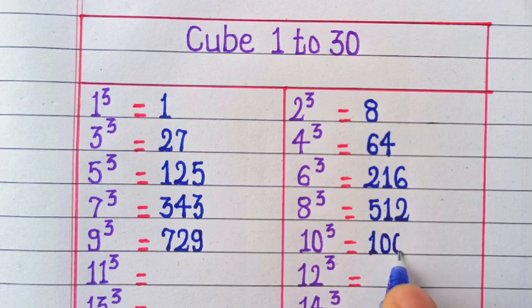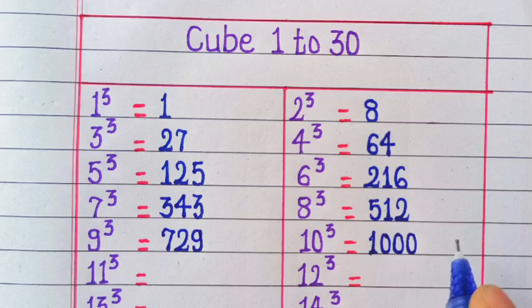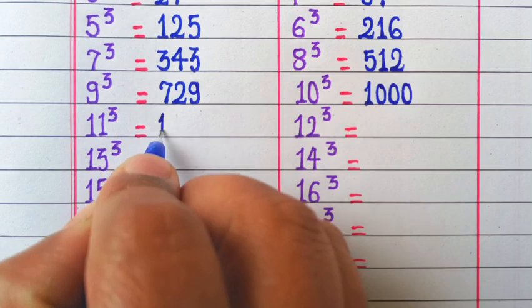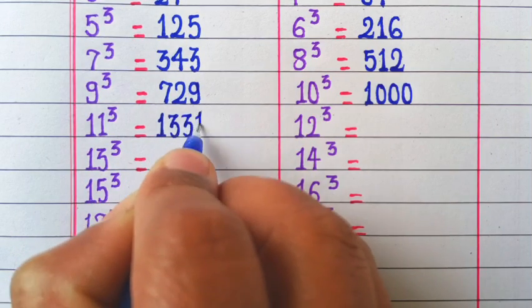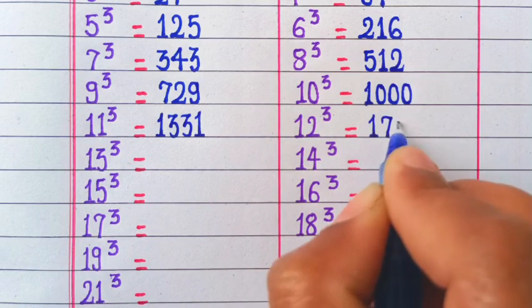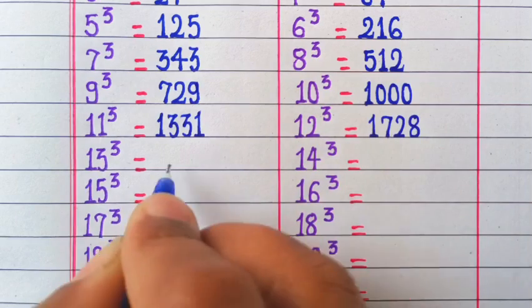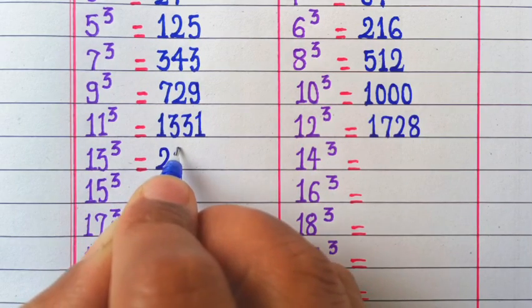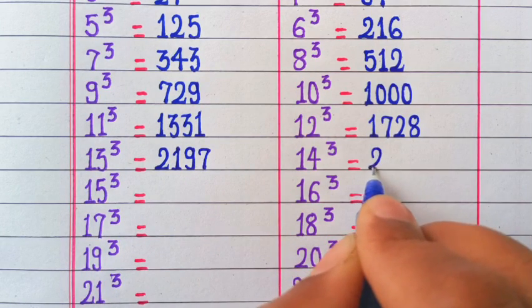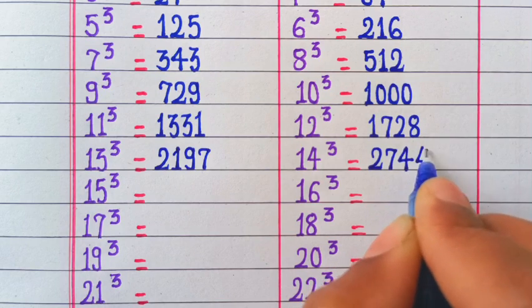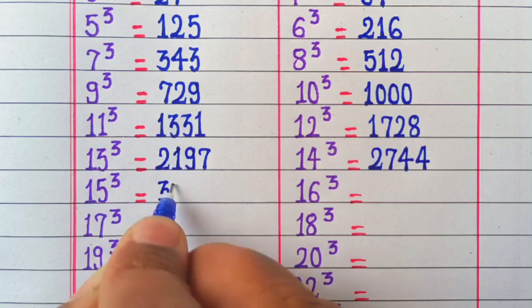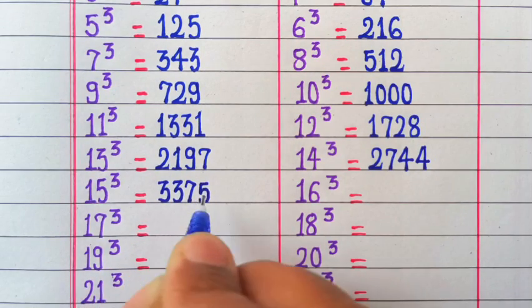10 cubed is 1000, 11 cubed is 1331, 12 cubed is 1728, 13 cubed is 2197, 14 cubed is 2744, 15 cubed is 3375.